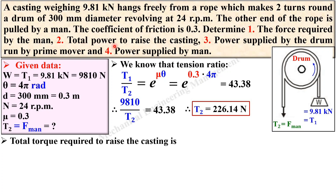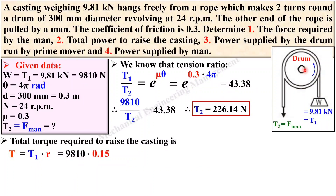For the second objective, we find the total power to raise the casting. The power equation is P = (2πNT) / 60, where T is the torque. So first we find the torque. Torque T = force × radius. The total torque required to raise the casting equals T1 × radius. Substituting T1 = 9810 N and the drum radius = 0.3 / 2 = 0.15 m, we get torque = 1471.5 Newton·meter.